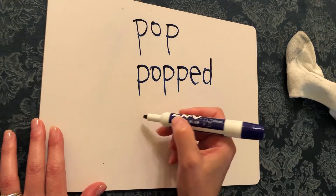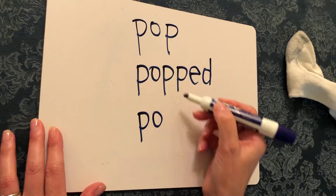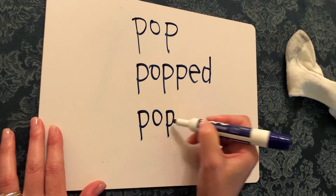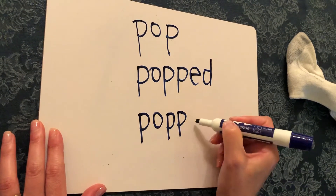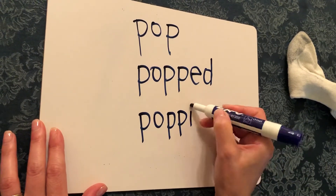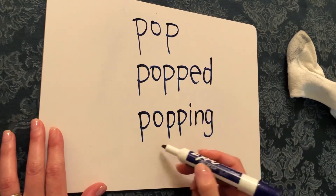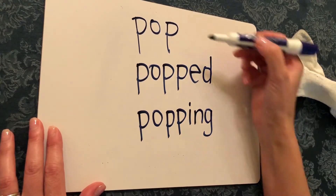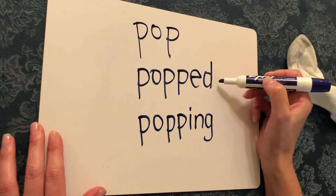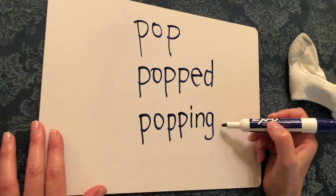Again, to make a new word, you double your final consonant — that's a P — and in this case you add the ING suffix, making the word popping. So pop becomes popped and then becomes popping.